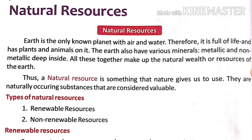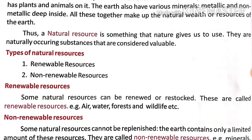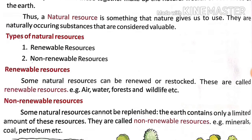There are two types of natural resources: renewable resources and non-renewable resources. Some natural resources can be renewed or restored — these are called renewable resources. Examples include air, water, forests, and wildlife. These resources are not limited in amount and can be renewed.